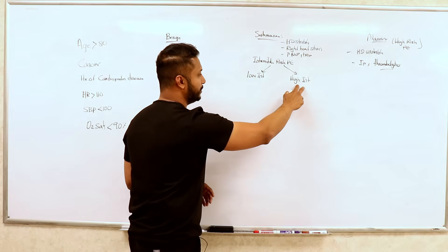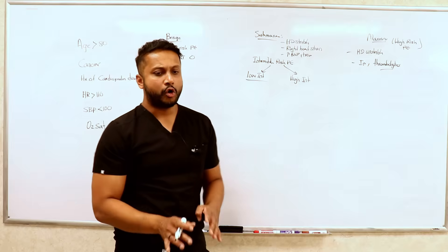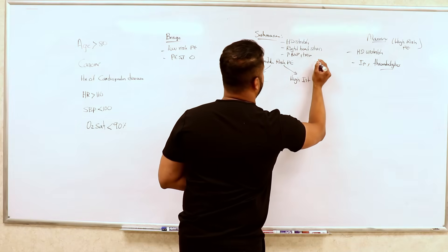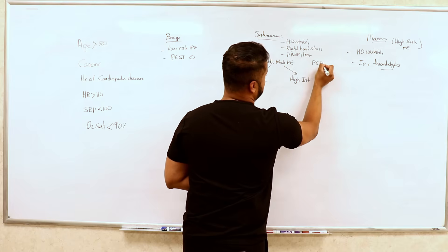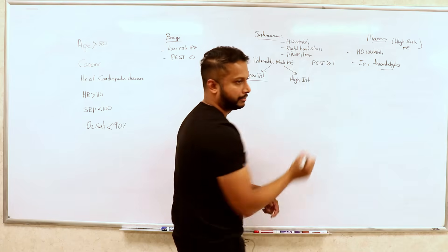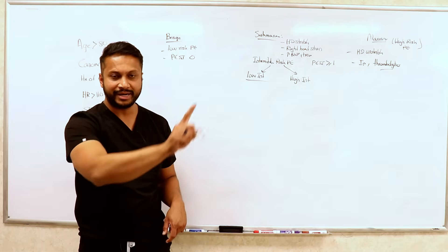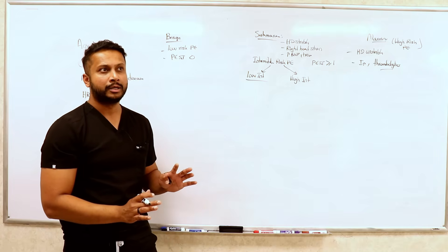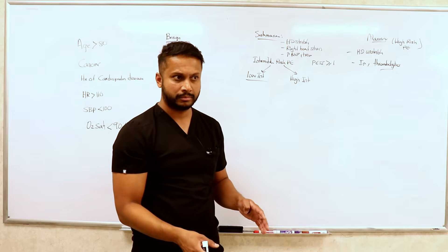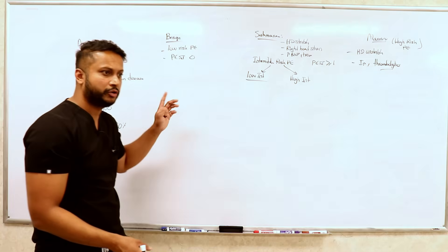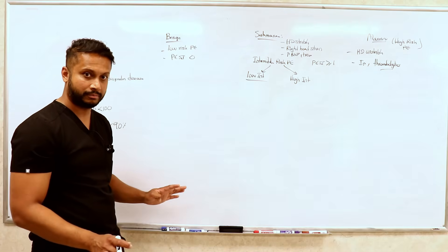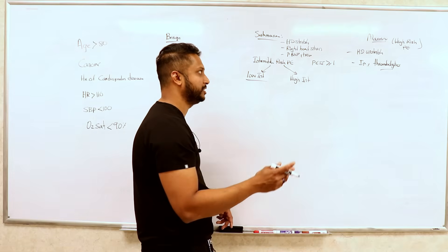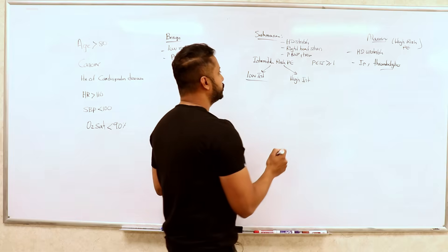In order to call it intermediate risk PE, you're going to need a PESI score greater than or equal to one. Even if you're at one point, that automatically falls into intermediate risk. The reason for this change is to dictate how you're going to treat your patient. If your PESI score is zero, you treat as an outpatient. Whereas if it's intermediate risk with a PESI score greater than one, you differentiate further.